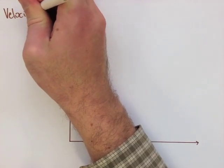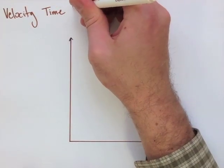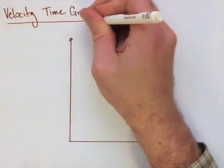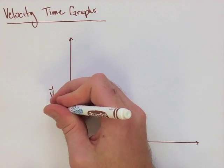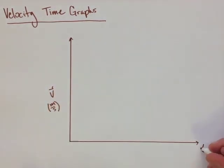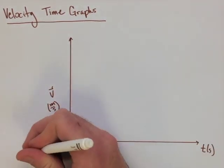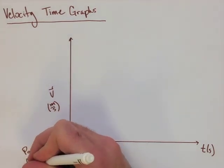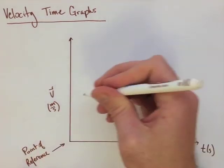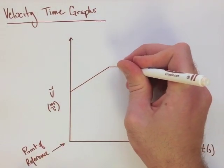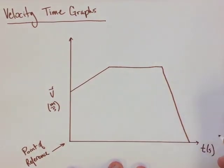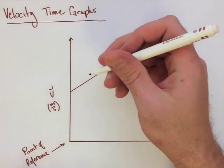A velocity time graph is very similar to what we did with a displacement time graph, but in this case, instead of measuring a distance, we're measuring a velocity. We aren't showing the direction here, but normally you would have a direction associated with a velocity. Our point of reference in this case is going to be 0 meters per second, but it could be something else, normally it is 0.